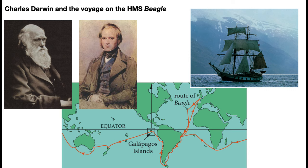When Darwin was at Cambridge, he met influential mentors: Hooker, a botanist, as well as Charles Lyell, who wrote Principles of Geology, earlier in his career. After Darwin graduated from Cambridge, they arranged for him to be an unofficial naturalist on the HMS Beagle, which was going to be a mapping expedition that would go around the world.